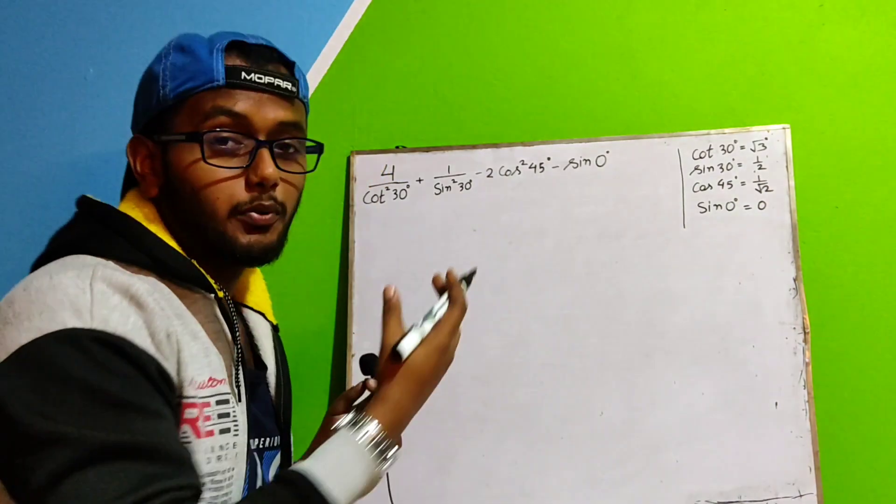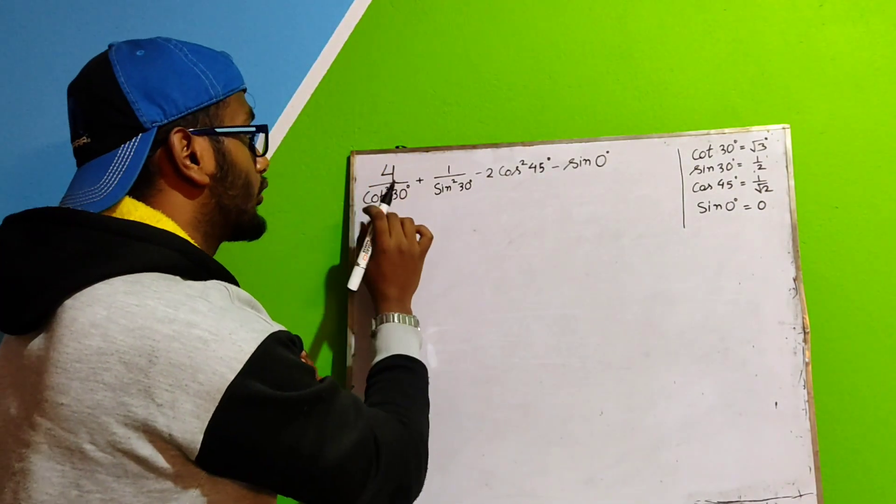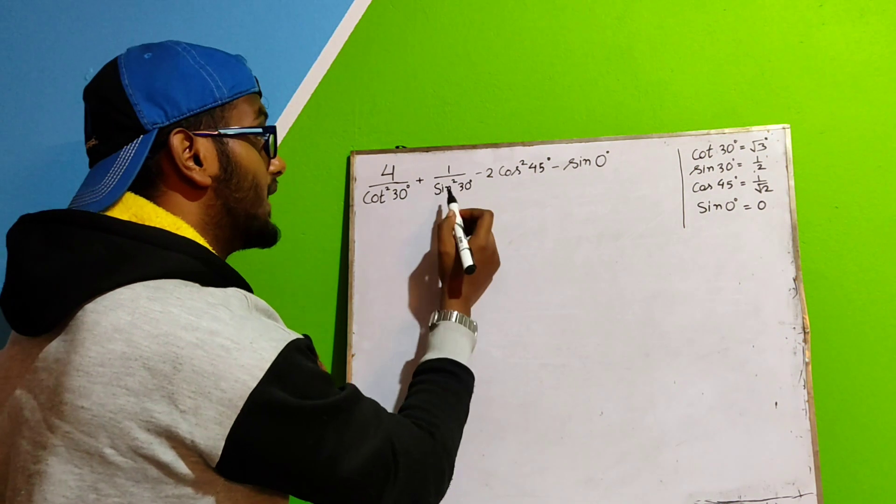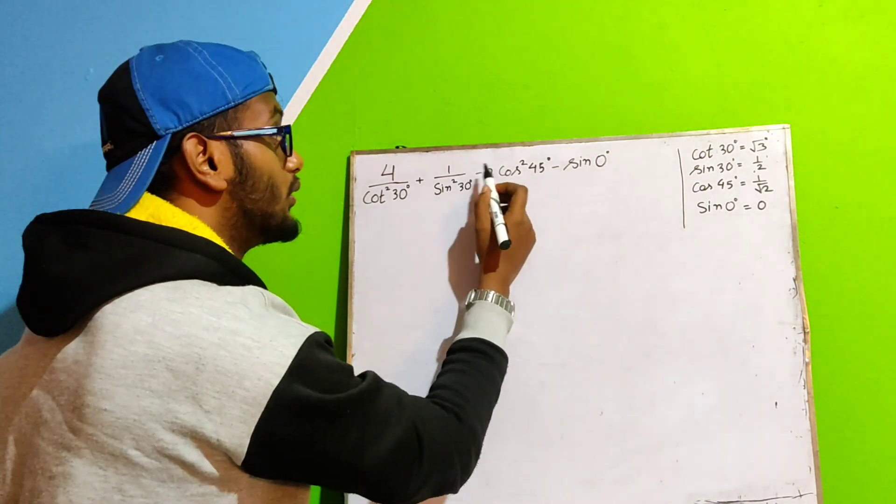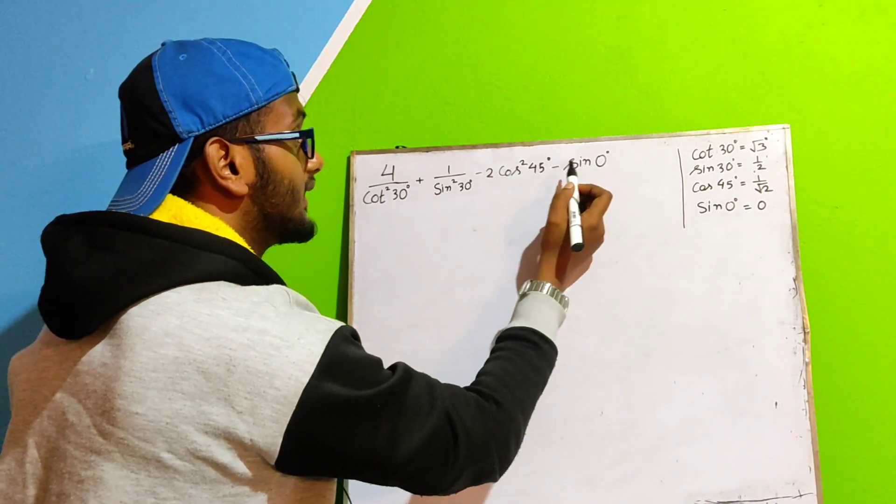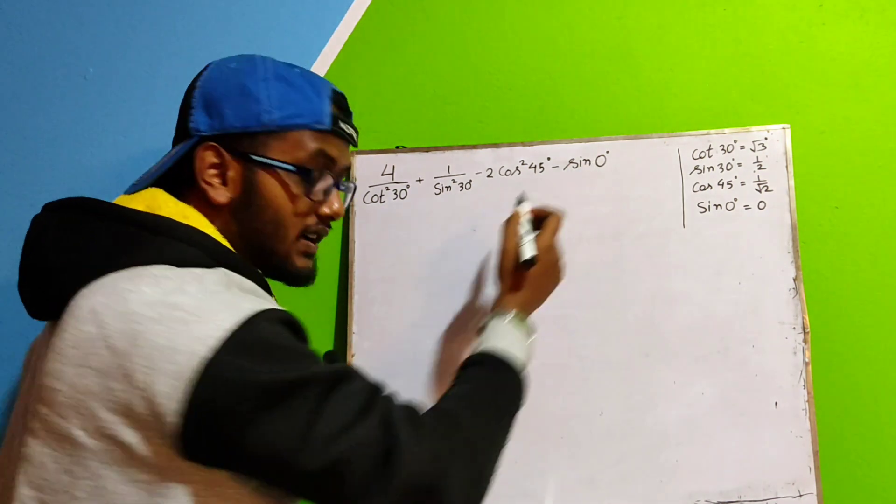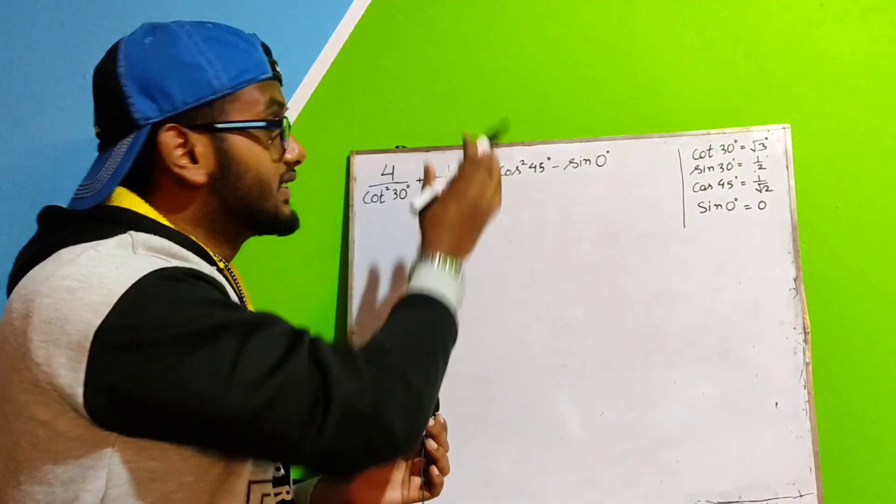Hello everyone, so in this problem, what is it? 4 cot² 30° + 1 by sin² 30° - 2 cos² 45° - sin 0°. They have said to find the value of this whole sum.